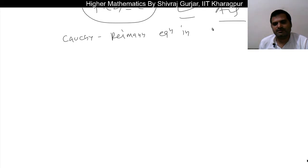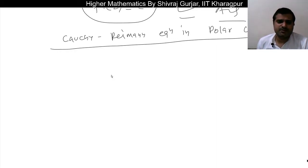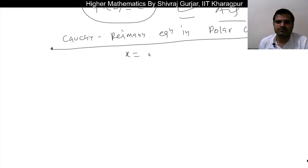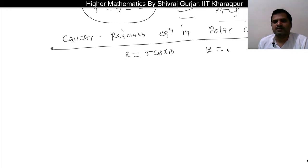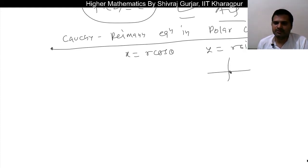We are going to discuss the Cauchy-Riemann equation in polar coordinates. Just as we have Cartesian coordinates, what we have to do to convert to polar is: x is equal to r cos θ and y is equal to r sin θ. So if a point is (x, y), then x = r cos θ and y = r sin θ.